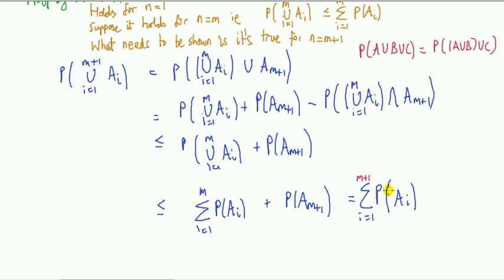That is, we have shown that the sum of the individual probabilities, m plus one of them, is bigger than or equal to the probability of the union of the m plus one number of events.